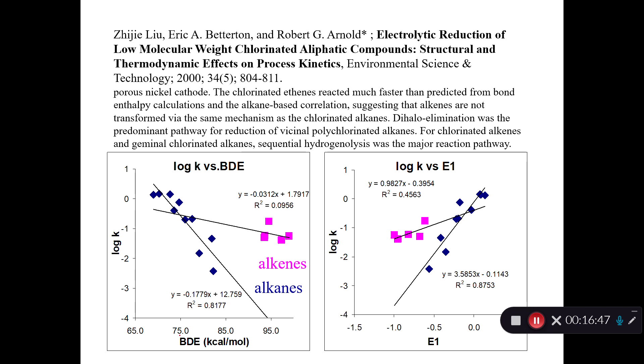Here's some more examples. This is actually from different Arnold, Robert Arnold, looking at electrolytic reduction of low molecular weight chlorinated compounds. He used bond dissociation energies here. They're reasonably good. This is not very good. That's not a good R squared. But that's a good R squared. So sometimes BDEs were working well. Here's one electron reduction potentials. Not so great here, but pretty great here. So sometimes they work well, sometimes not so much.